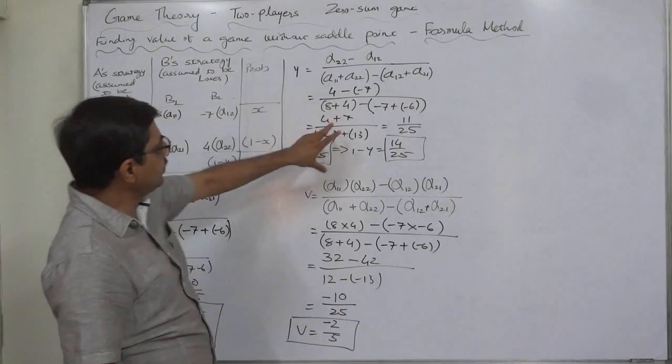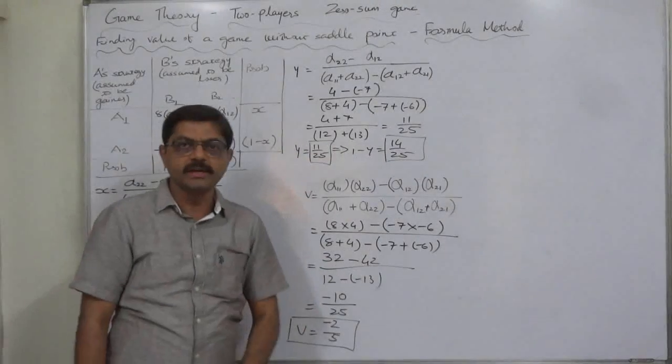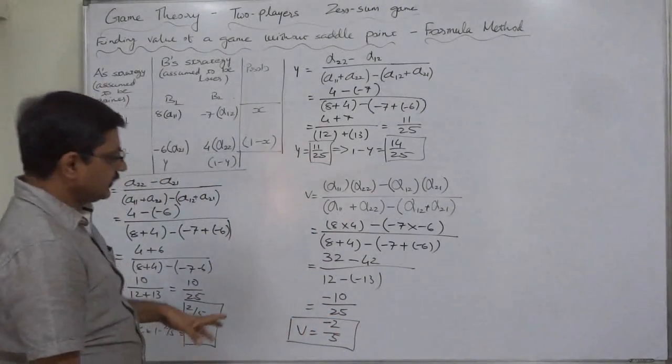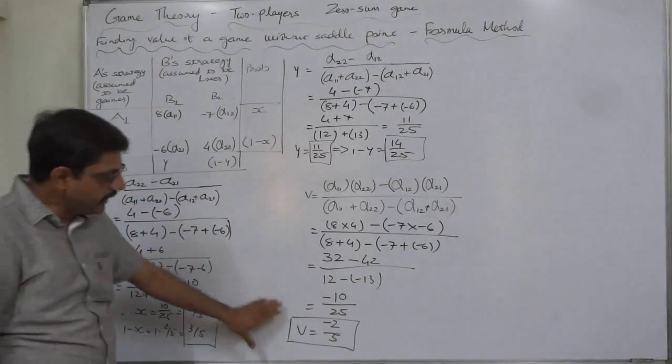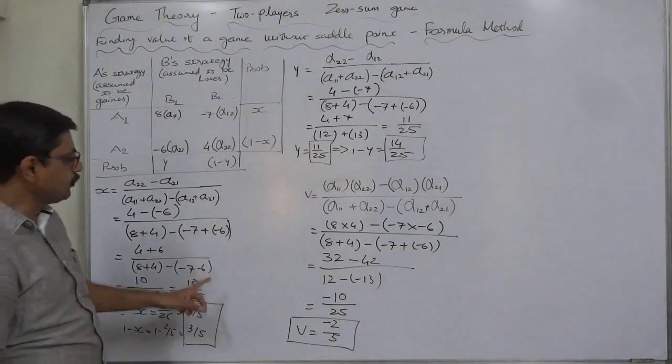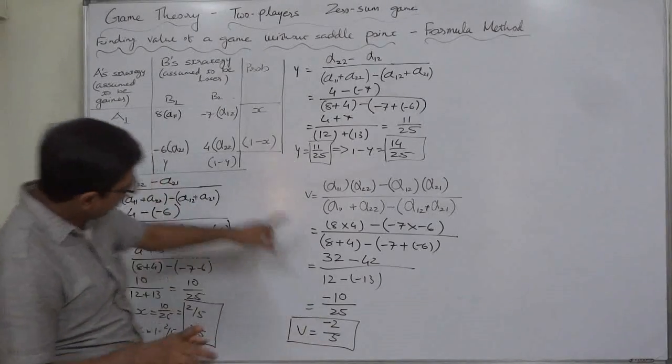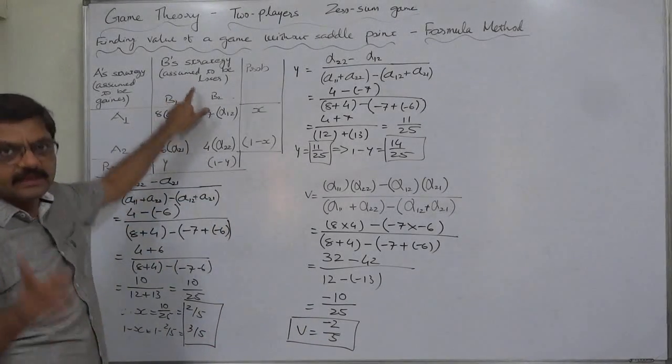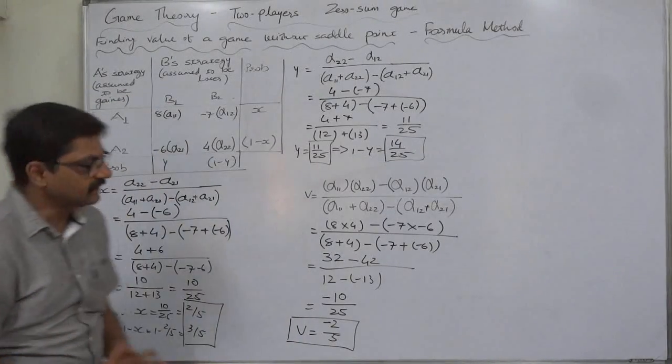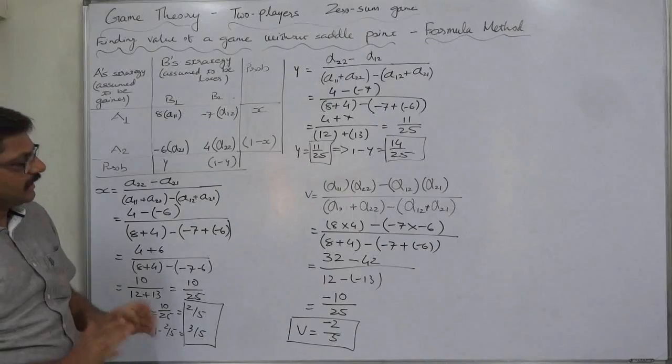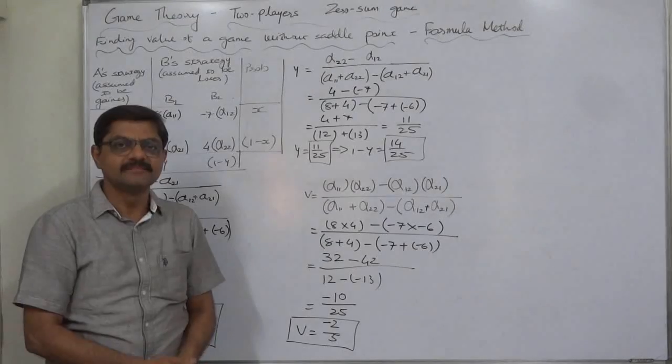Similarly B should play the strategies B1 and B2 in the ratio of 11 is to 14 in random manner so that the value of the game will be minus 2 by 5. Minus 2 by 5 for A becomes the loss in long run and minus 2 by 5 becomes gain for B in the long run. I hope you can understand the thing. Again I tried to make both the methods as easy as possible. That's it thank you very much.